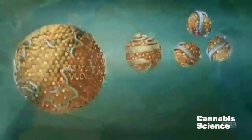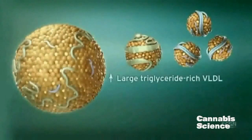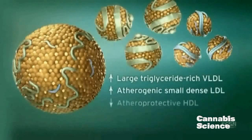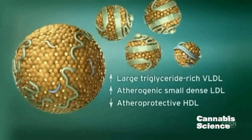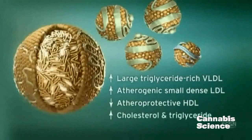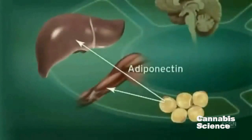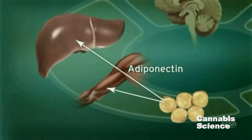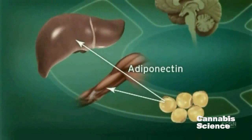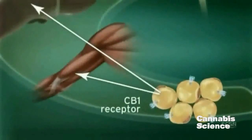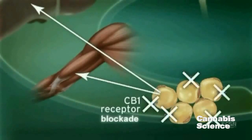Large triglyceride-rich VLDL sets the stage for the atherogenic lipid profile of small, dense LDL, decreased levels of atheroprotective HDL, and overall increases in cholesterol and triglyceride levels. Adiponectin, another hormone secreted by adipocytes, regulates lipid and glucose metabolism and is believed to regulate fatty acid oxidation in muscle and liver, thus improving insulin sensitivity. CB1 receptor stimulation in adipocytes reduces adiponectin, while CB1 blockade increases adiponectin synthesis.